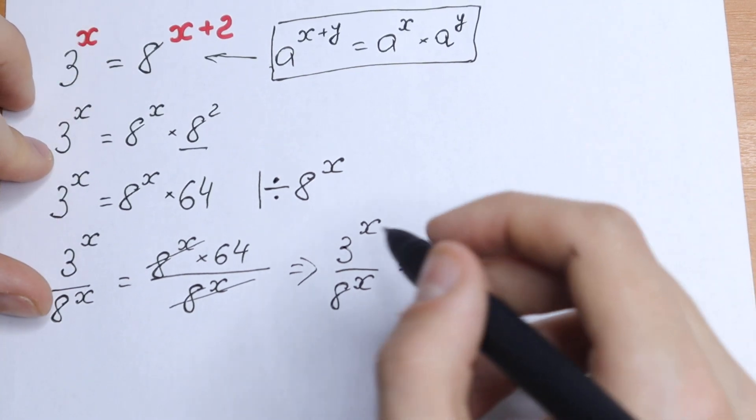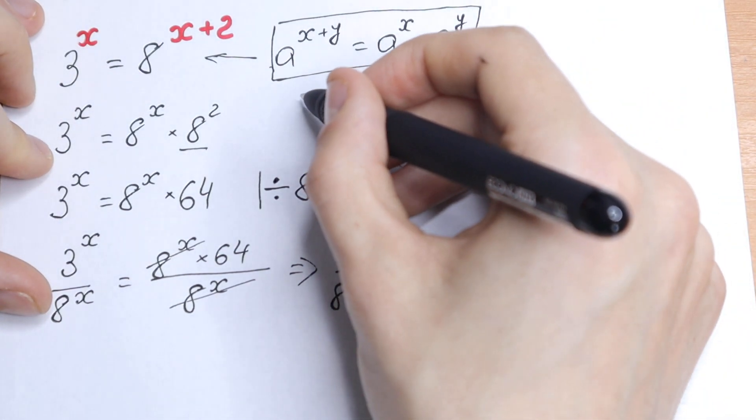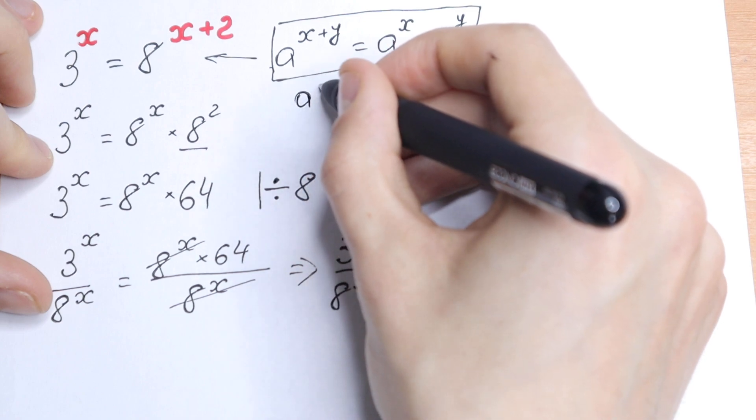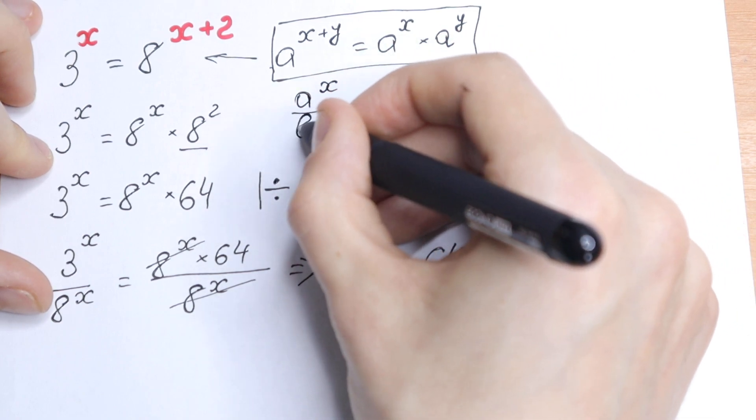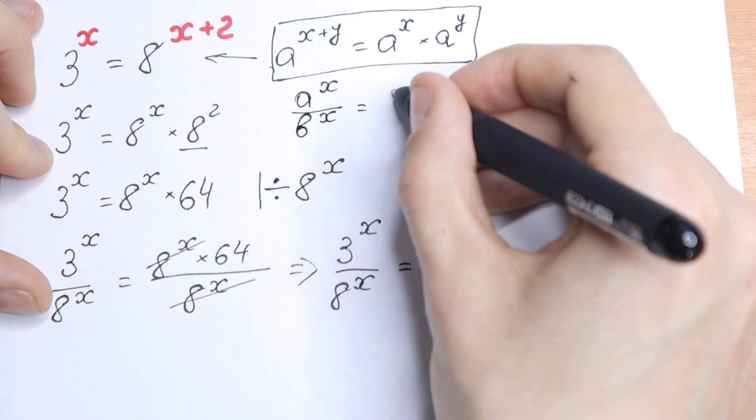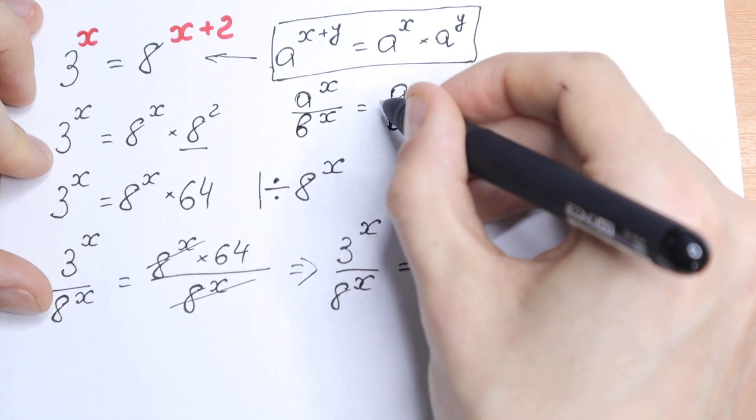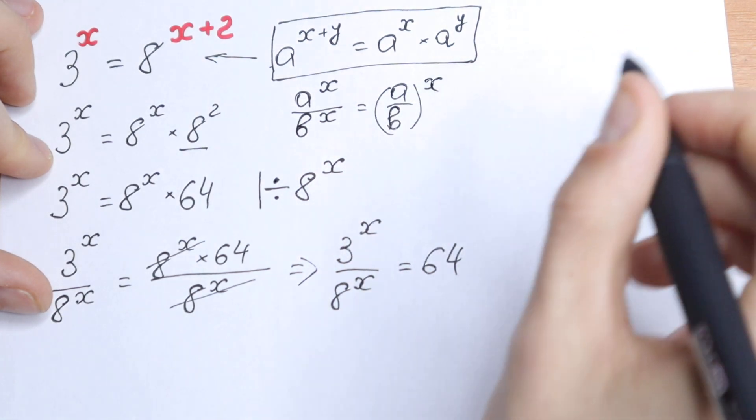The next rule we need is to write right here. I write this rule right here. If we have a to the power x over b to the power x, we can write it under one parentheses and raise a over b to the power x.